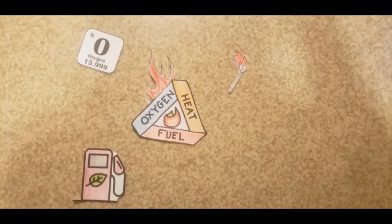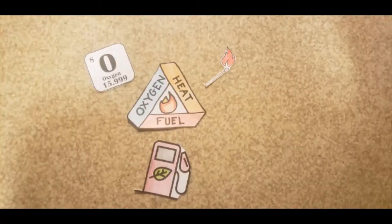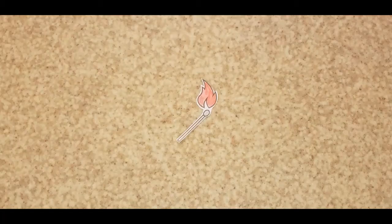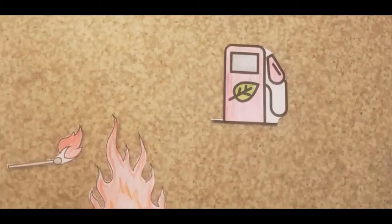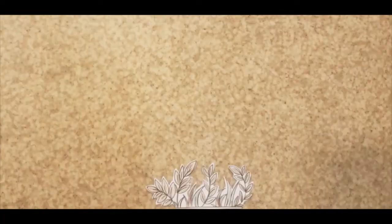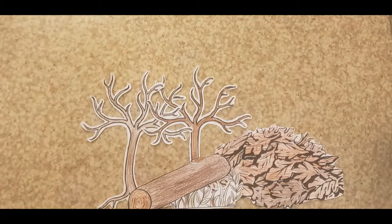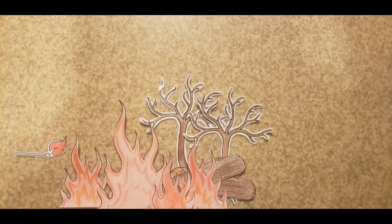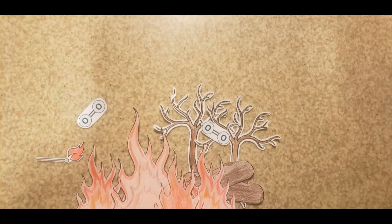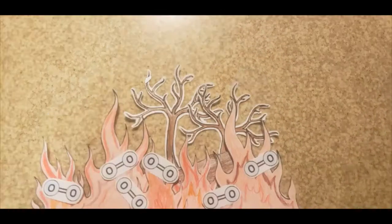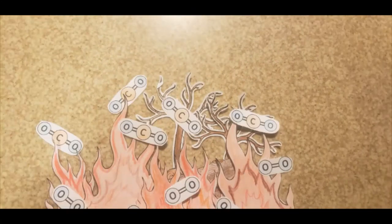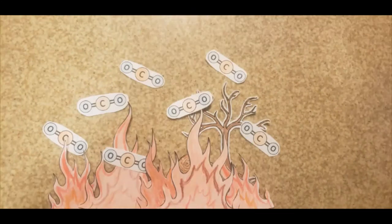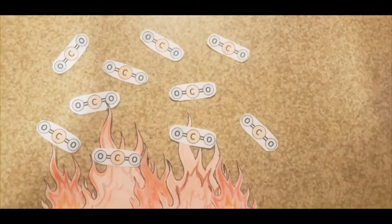A heat source is required to generate ignition — this is our spark. The spark feeds on material to burn, known as fuel. Fuel can come in the form of dead or dry grasses, trees, or leaves. As these fuels burn, the flames feed off the surrounding oxygen, which is needed to sustain the combustion process. Oxygen reacts with the burning fuel to release heat and CO2.